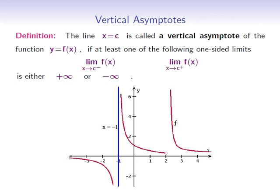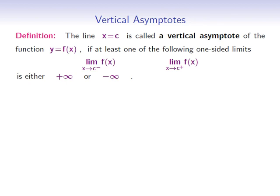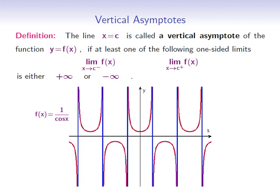x equals 2 is also a vertical asymptote of f. Note that the left-hand limit is a number, but the right-hand limit is positive infinity, and therefore x equals 2 is indeed a vertical asymptote. In this picture, f does not have a vertical asymptote at x equals 1 since both the left-hand limit and the right-hand limit are not equal to positive or negative infinity. A function can also have infinitely many vertical asymptotes. For example, the function 1 over cos x has infinitely many vertical asymptotes, as you can see in that graph.